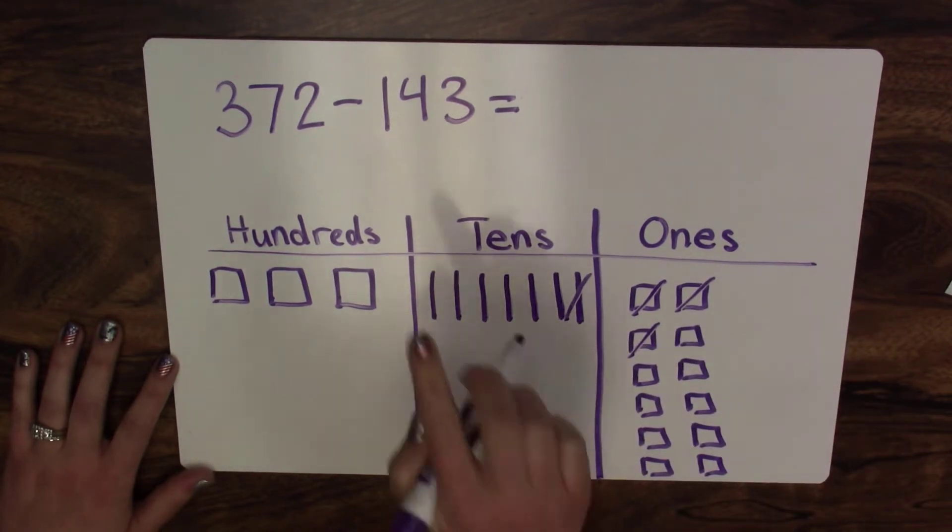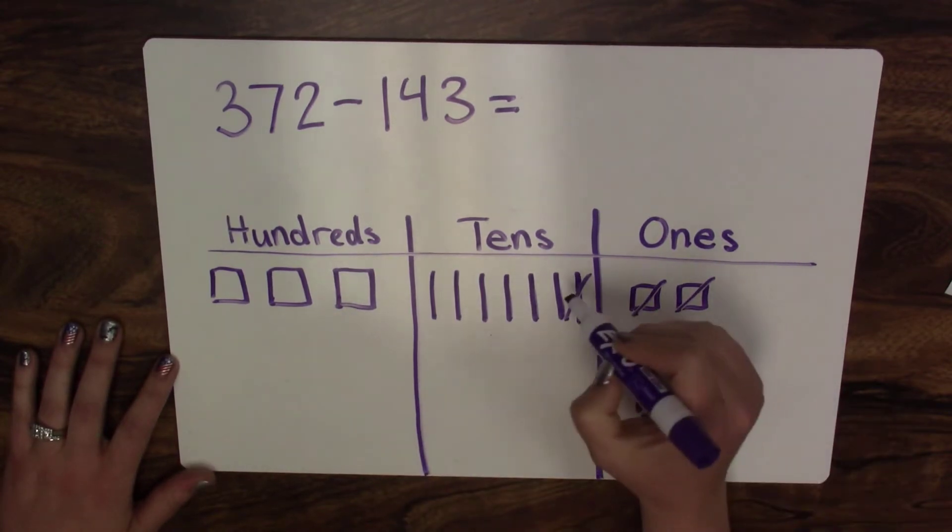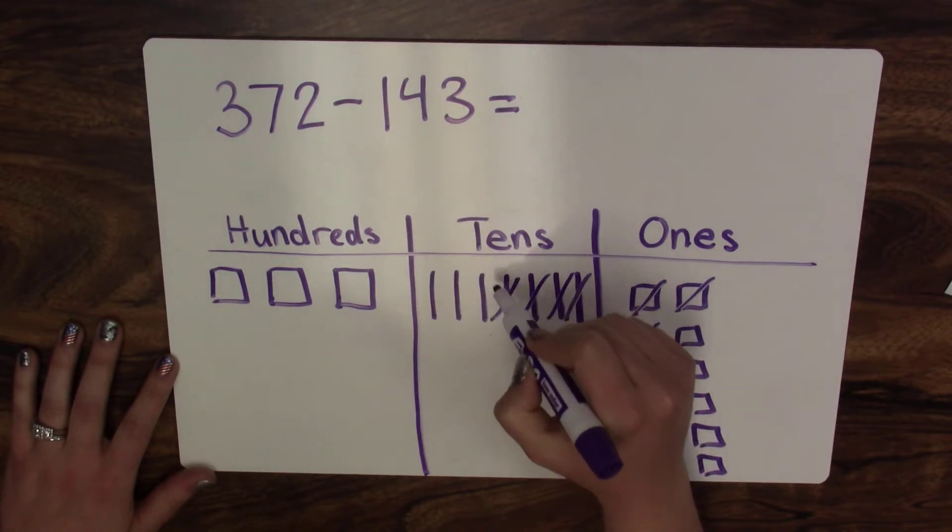When I look at the tens, I'm taking away four ten rods. And I have four ten rods to take away. So I'm going to cross off four tens: one, two, three, four.